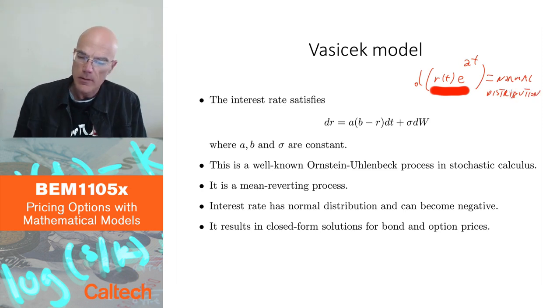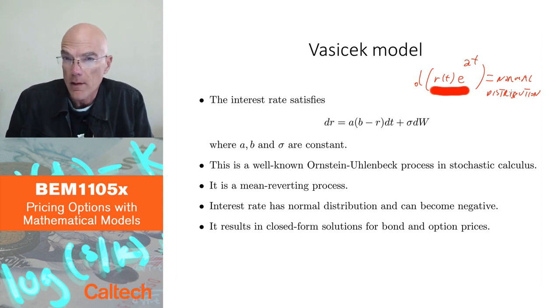So why is that bad? Well, it's bad in the sense that it can go negative. In fact, it can go as negative as you wish. There is no limit, and interest rates don't really go negative. So that's not so good. I mean, using parameters a, b, and sigma in the right way, you can make the probability of going negative small, but still, it can go negative.